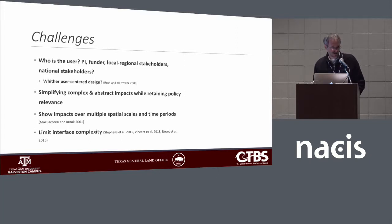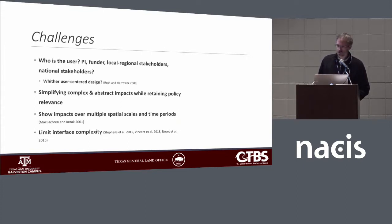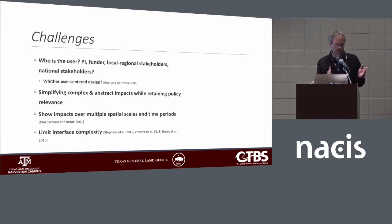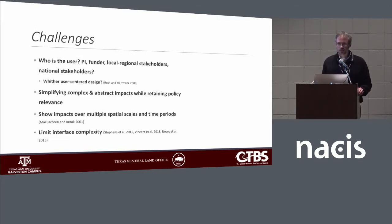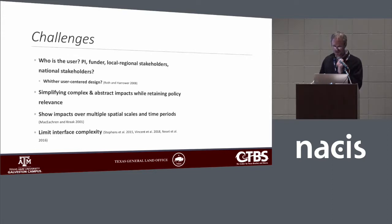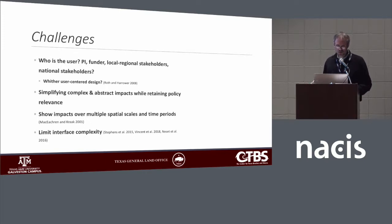Some challenges I recognized in advance — and many have since been confirmed — included identifying the user. We were serving multiple masters: our PI, the funding organization, and we needed to be responsive to local to regional stakeholders but also national stakeholders, such as those from Washington asking what this means for the U.S. economy. Other challenges included simplifying complex and abstract impacts while retaining policy relevance, showing impacts over multiple spatial scales and time periods, and doing all of this while limiting interface complexity.